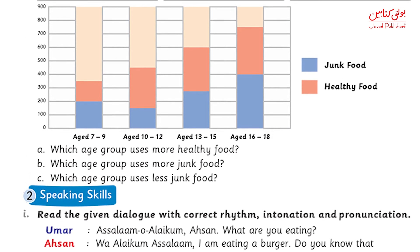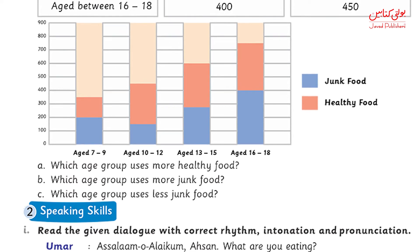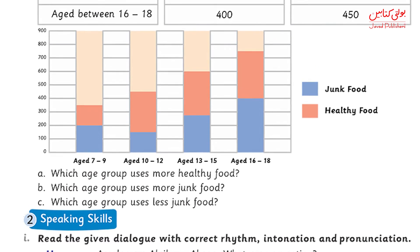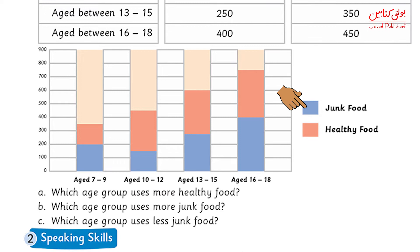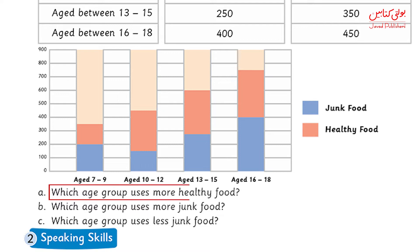When you have all of this data and values, we apply them in the graph. In the graph, junk food is shown in blue and healthy food is shown in red. Now let's discuss the questions. The first question is: which age group uses more healthy food?